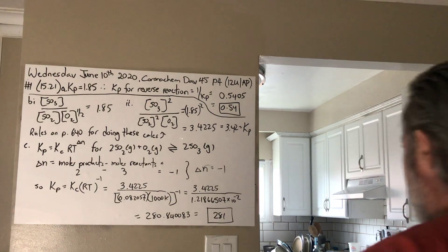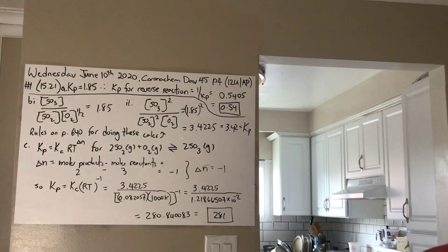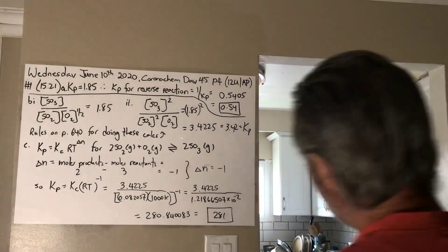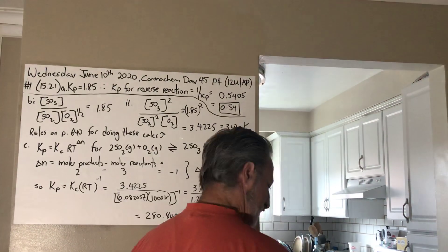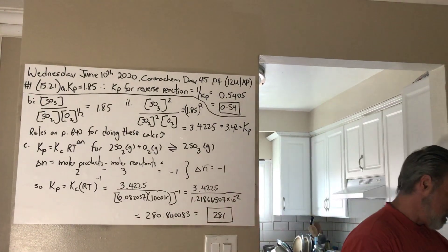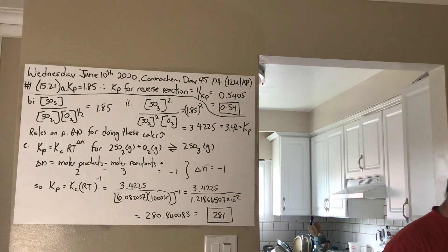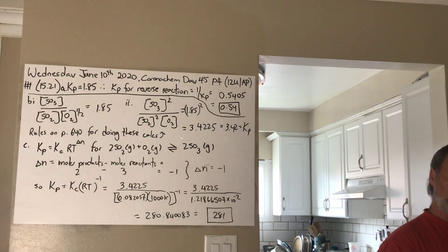Good afternoon, class. Today is June the 10th, day 45 of Corona Chem for grade 12 U and AP. Your mock test had four questions, 21, 31, 43, and 68.